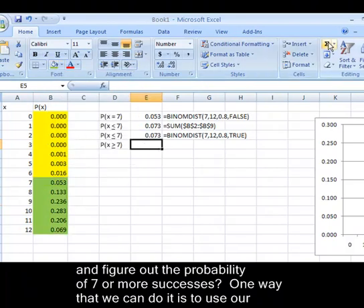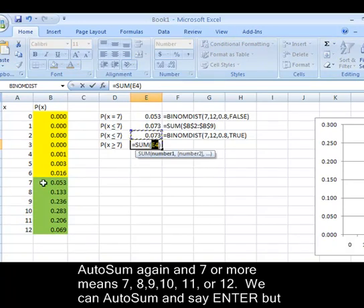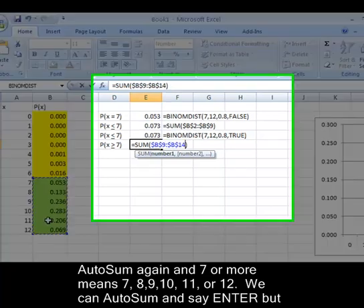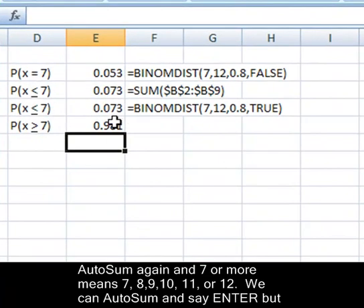Well, one way we could do it is to use our auto sum again, and seven or more means seven, eight, nine, ten, eleven, or twelve. We can auto sum and say enter.